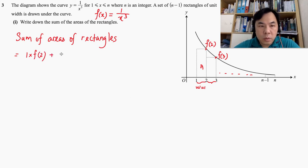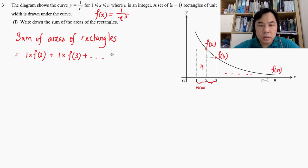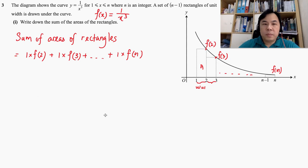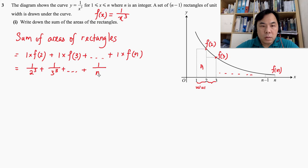The second rectangle is also one unit width and the height given by f(3). We continue this process, summing up all the rectangles until the last rectangle that has a height given by f(n). Substituting the x values, that will be 1 over 2 to the power of 3, plus 1 over 3 to the power of 3, and so on and so forth, until the last term 1 over n to the power of 3.